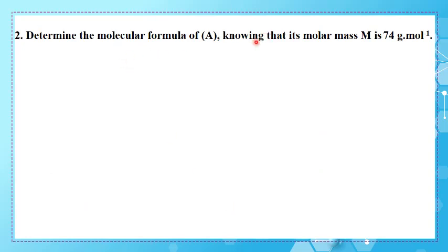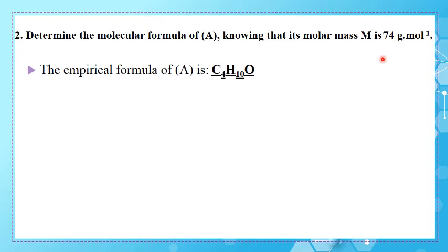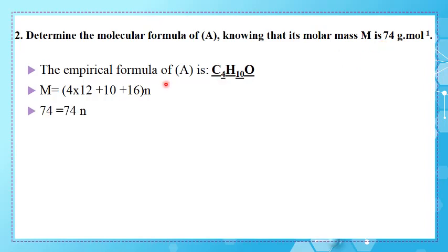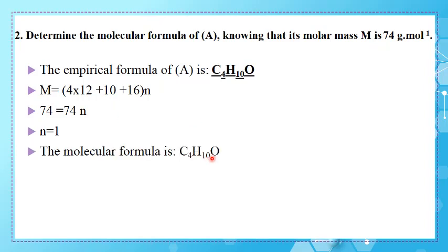To determine the molecular formula of A, we need the molar mass of A. The molar mass of the empirical formula C₄H₁₀O is: 4×12 + 10×1 + 16 = 74. So 74 = 74N, giving N = 1. Therefore, the molecular formula of A is the same as its empirical formula: C₄H₁₀O. Sometimes N can equal 2, 3, etc., but in this case N = 1.